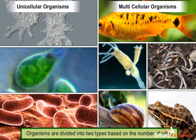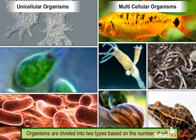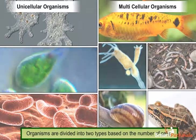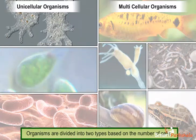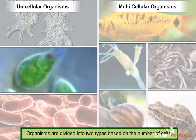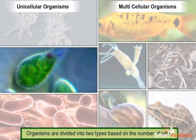Organisms which are made of a single cell are known as unicellular organisms. Amoeba and euglena are some examples of unicellular organisms.